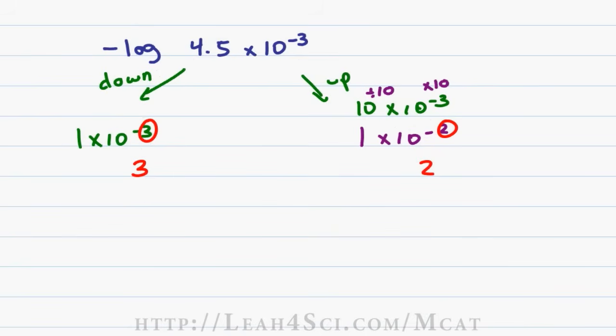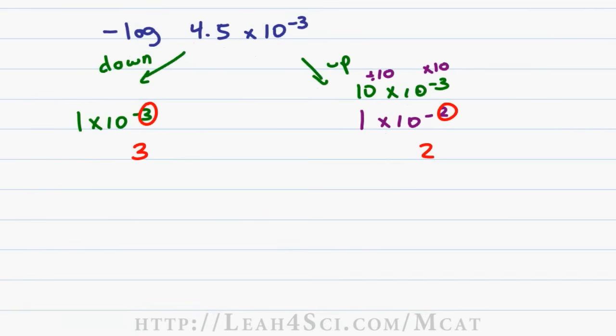Check your MCAT choices. If you see only one value between the pH of 2 and 3, pick that answer and save your time. But if you have multiple values and you need to zero in a little more, we can take this trick a step further.